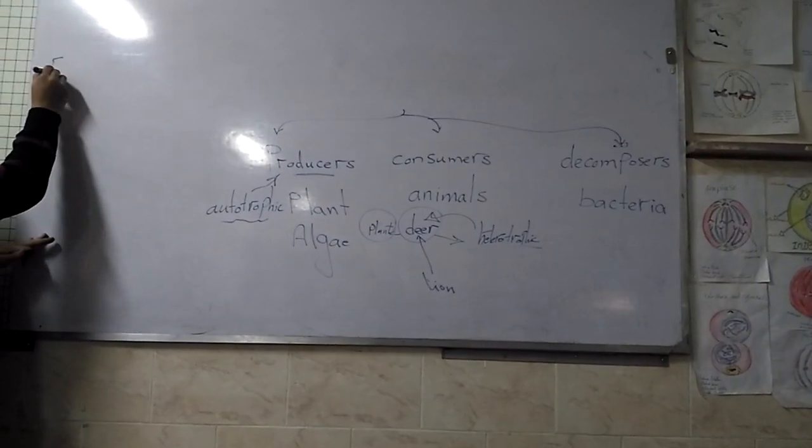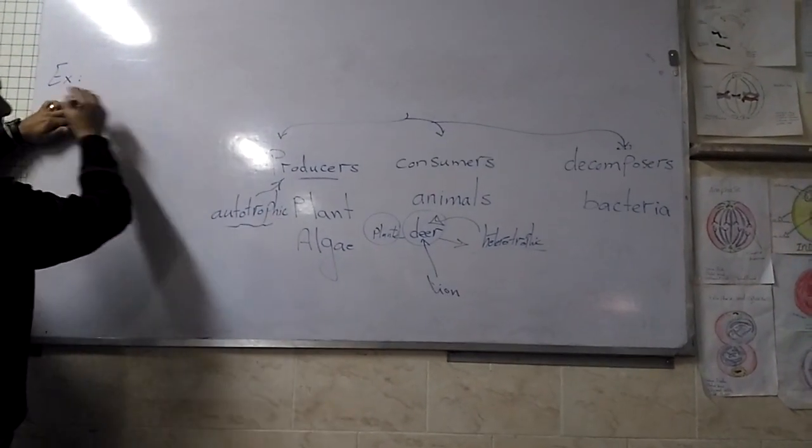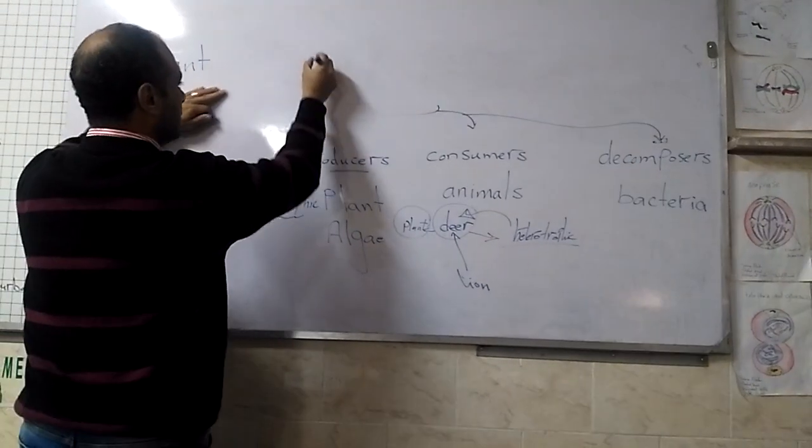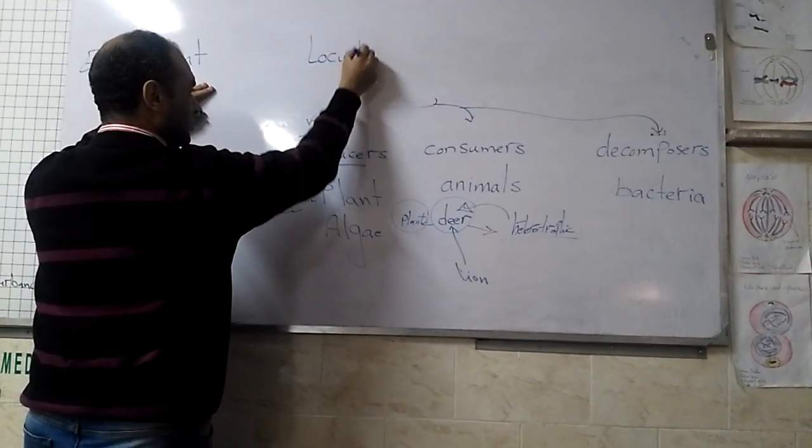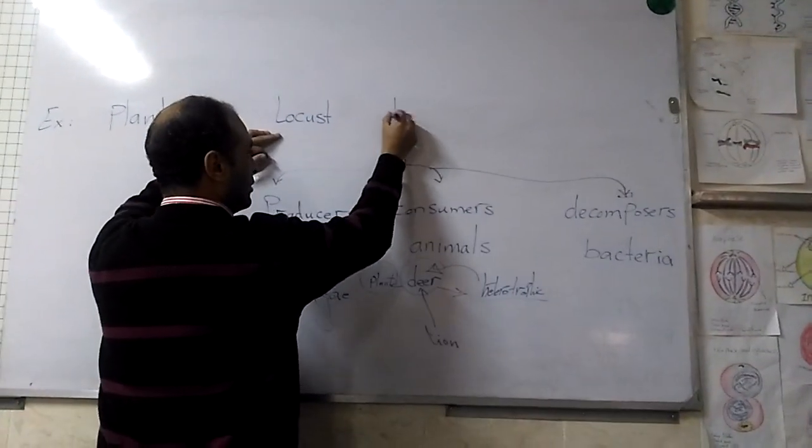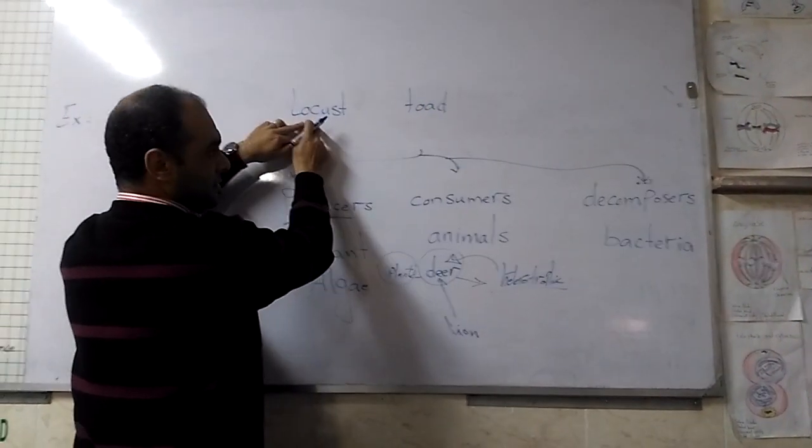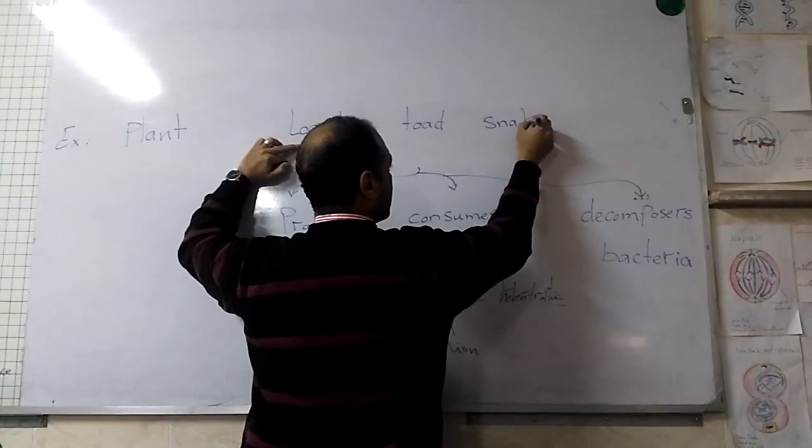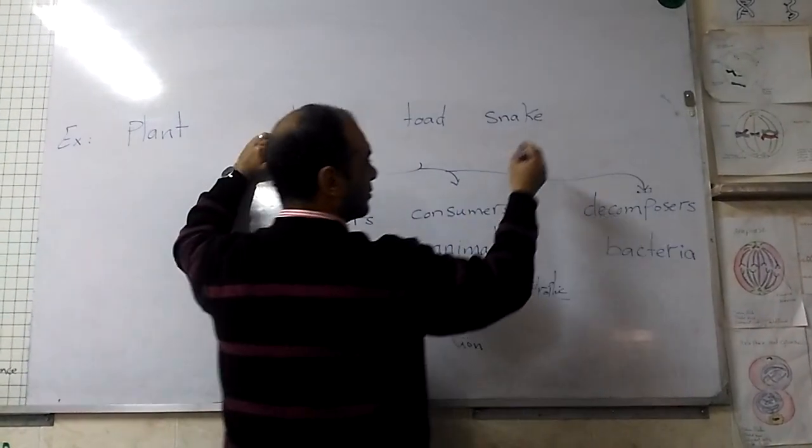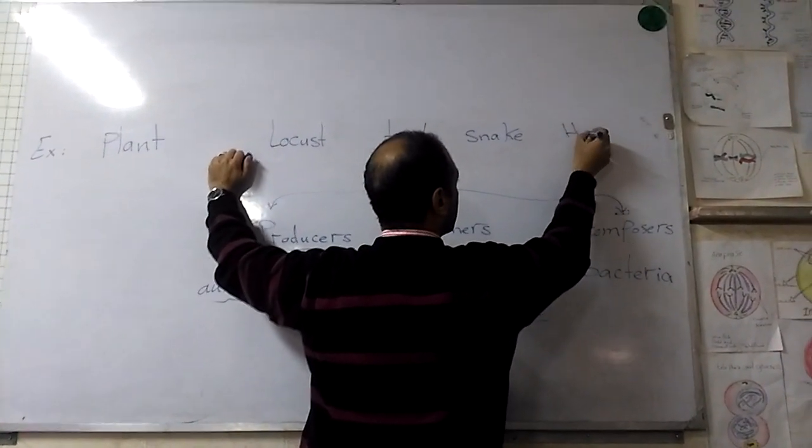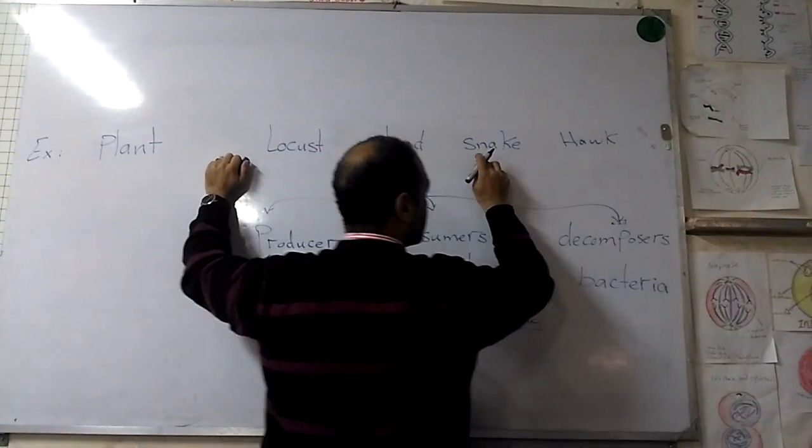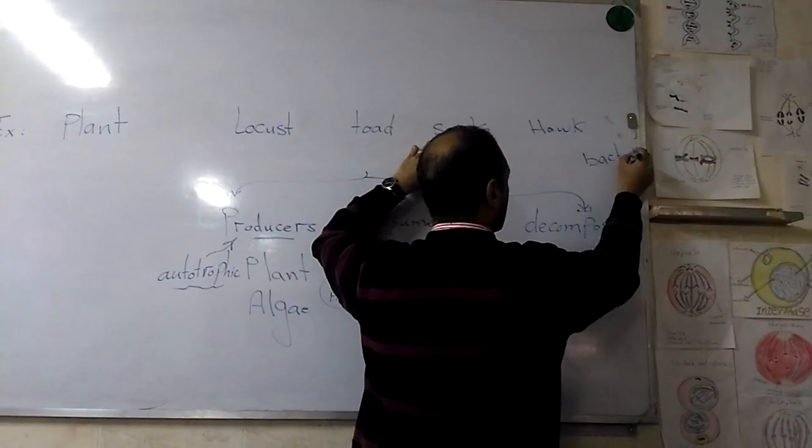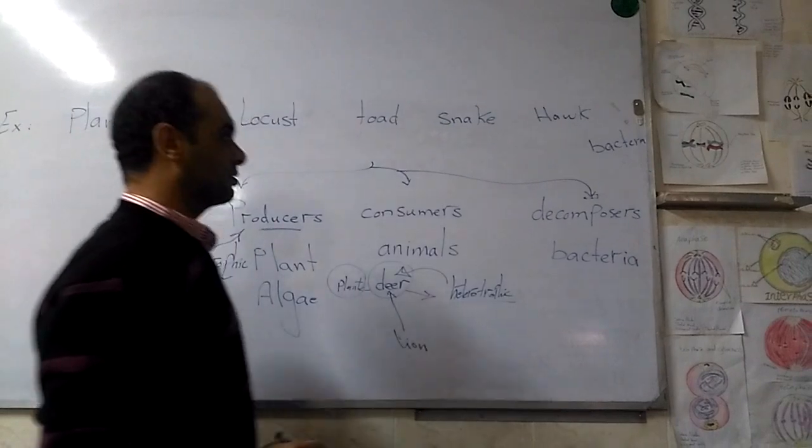For example, a plant is eaten by locust insects, then a toad eats the locust, then a snake eats the toad, then a hawk eats the snake. After the hawk dies, bacteria will decompose it.